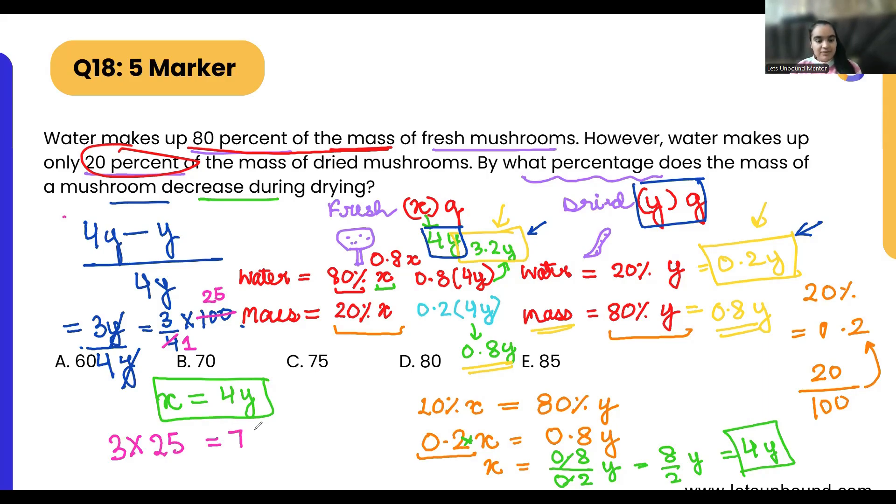So 75 percent of the mass of this mushroom has decreased during drying. This is the overall mass. So our correct answer is option C, 75. I hope this is clear. We need to do some calculations over here but overall this question is quite easy, right?